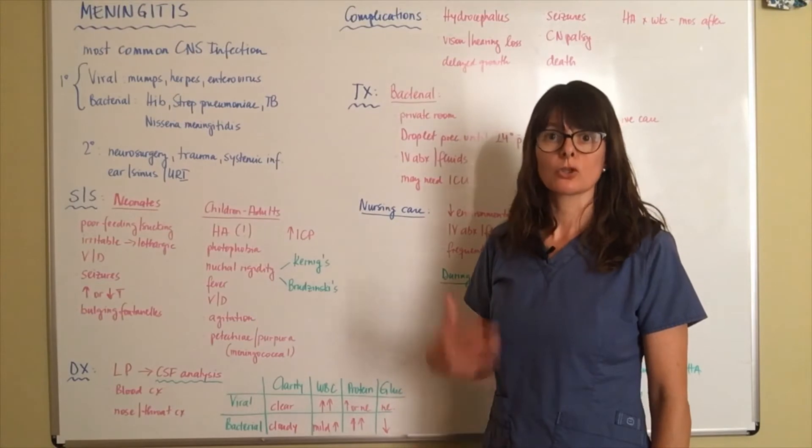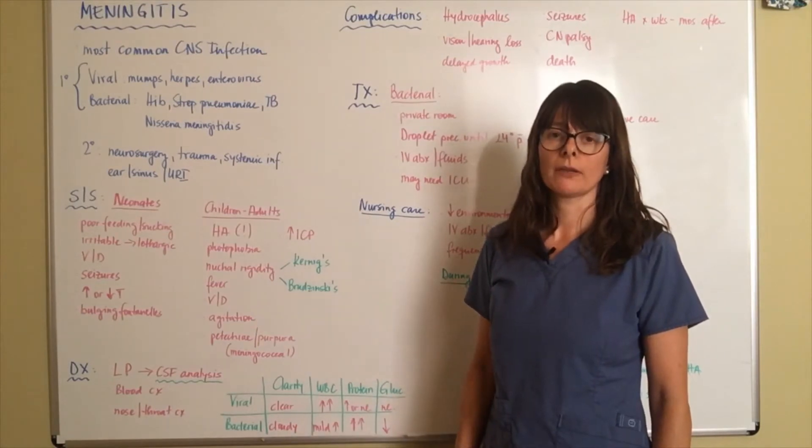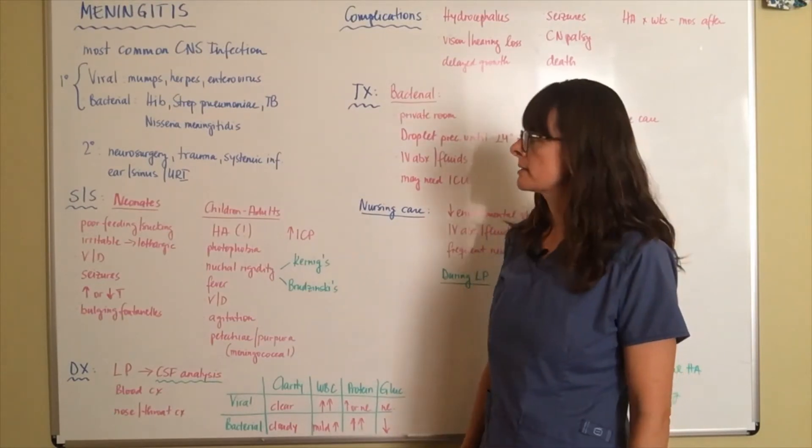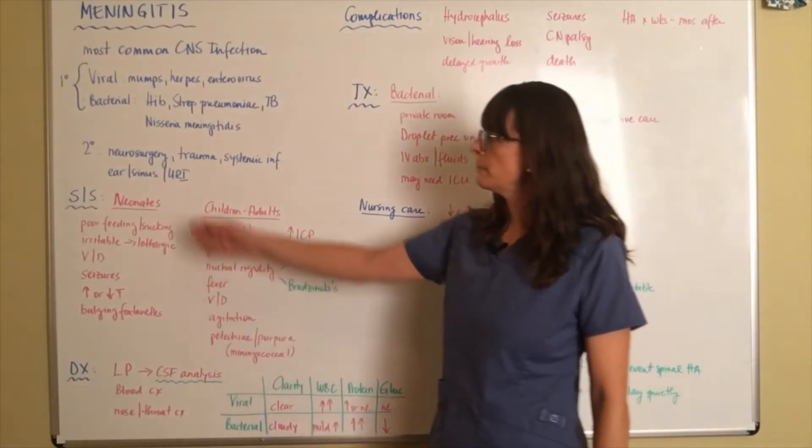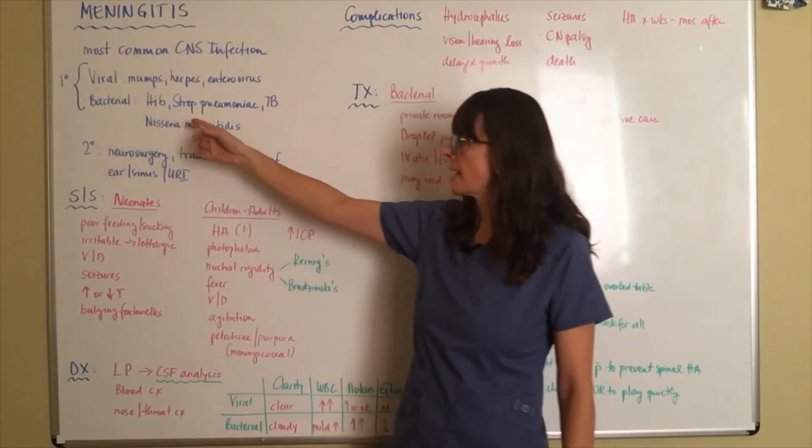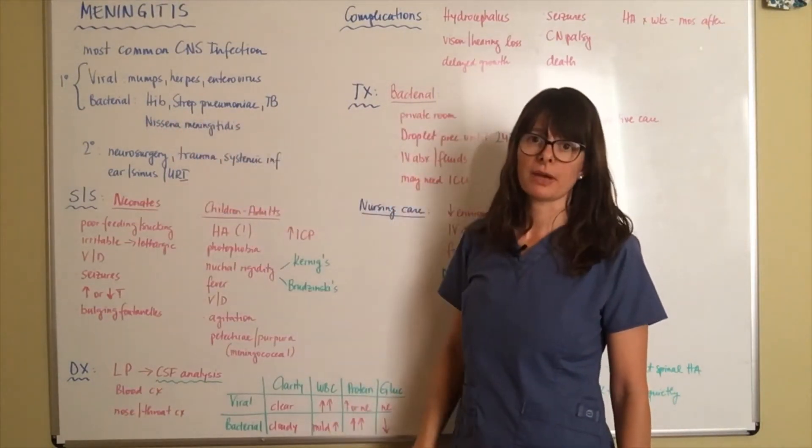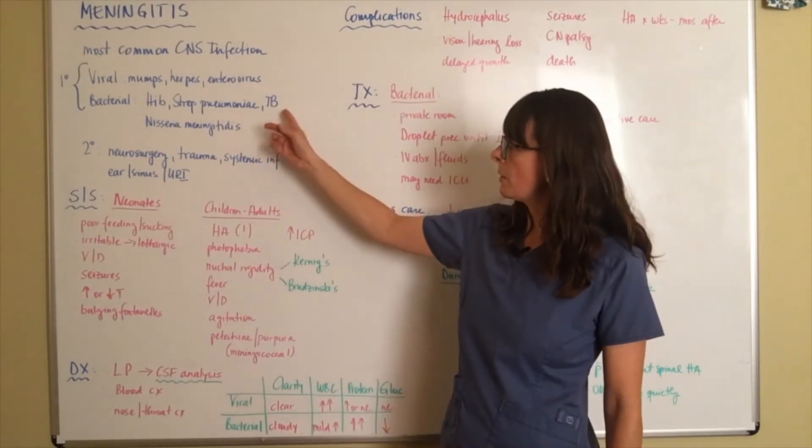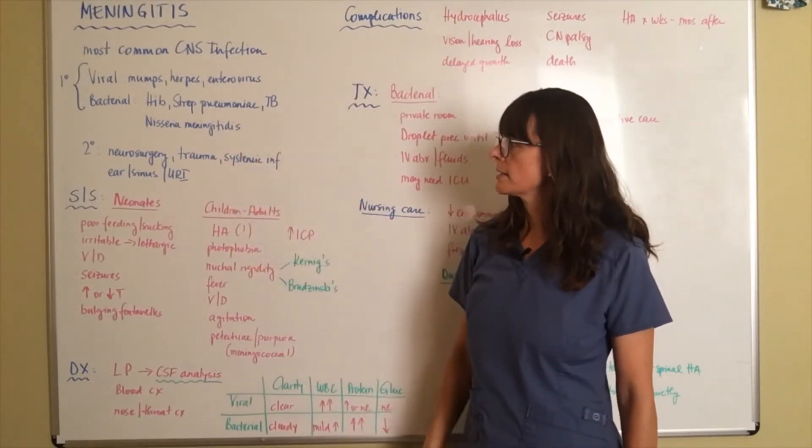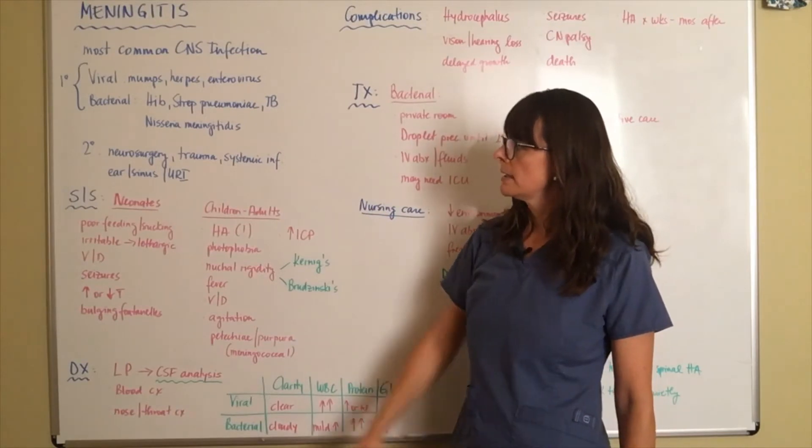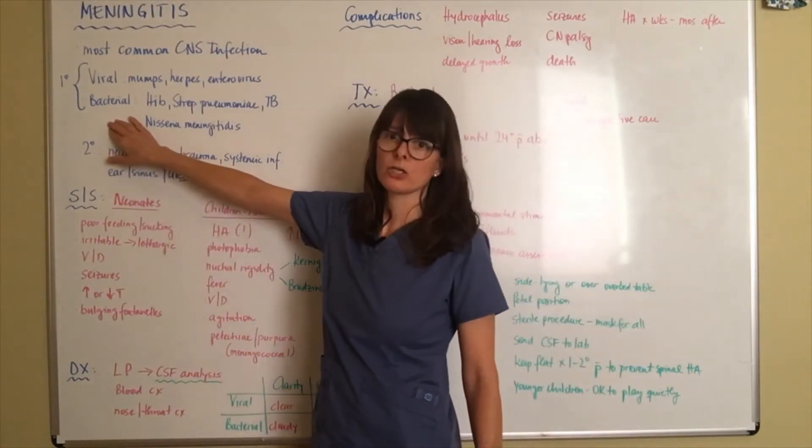Bacterial causes include HIB, so hemophilus influenza type B, that's also the cause for epiglottitis in children. Strep pneumonia, tuberculosis, and neisseria meningitis. These are all primary causes of meningitis.